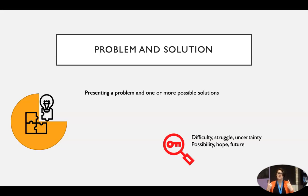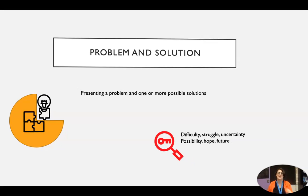We have some synonyms for problem like difficulty, struggle, uncertainty. And we have some synonyms for solutions: possibility, hope, and in the future. Those are all keywords to look out for to see if you have problem and solution text structure happening here.